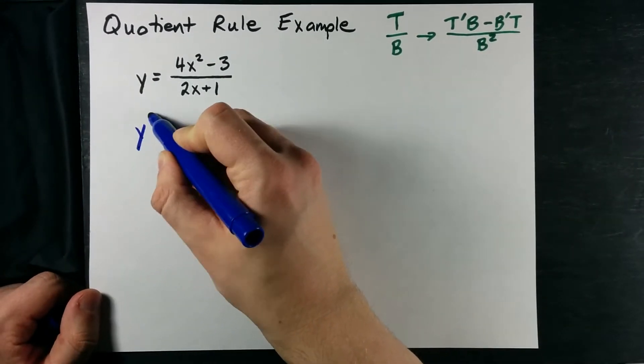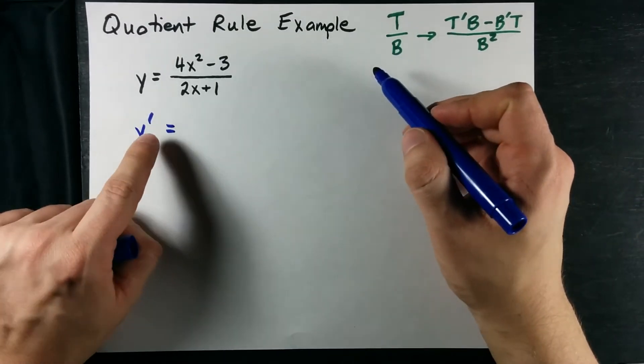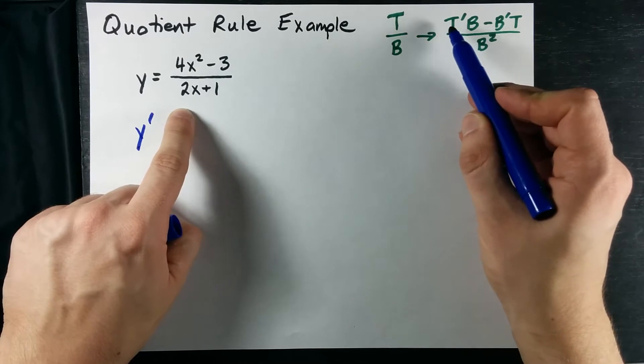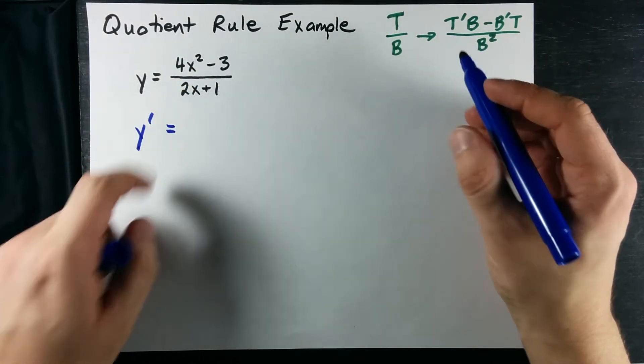Let's just do this one. We're looking for, if we're looking for the derivative of a quotient, the first thing we do is take the derivative of the top. Now the top is a polynomial here.